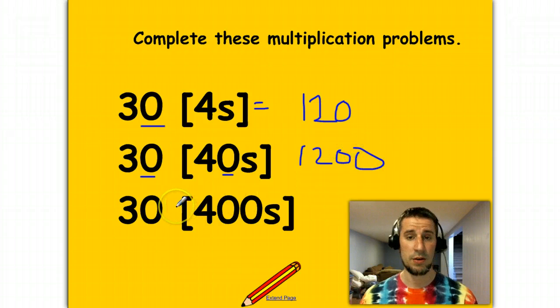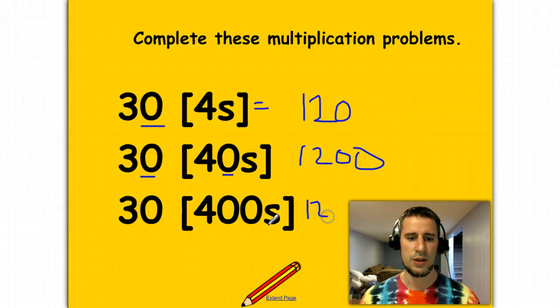And then finally 30 times 400s, holy cow, we didn't pick numbers. Same thing, do the 12, don't forget to add those zeros.